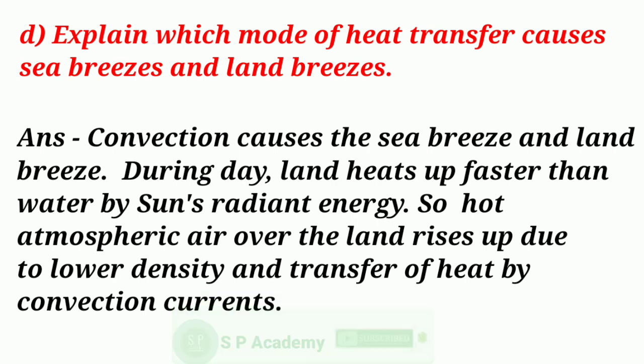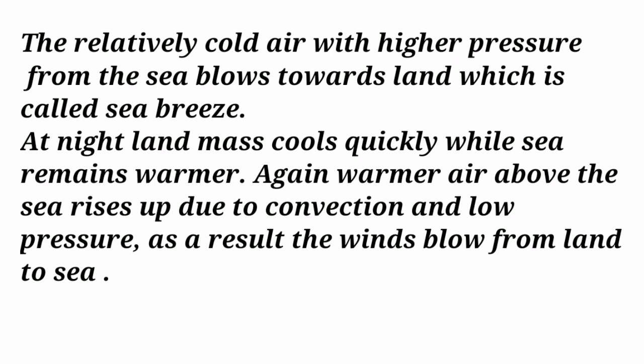Convection causes the sea breeze and land breeze. During day, land heats up faster than water by the sun's radiant energy. So hot atmospheric air over the land rises up due to lower density, transferring heat by convection currents. The relatively cold air with higher pressure from the sea blows towards land — this is called sea breeze. At night, land cools quickly while the sea remains warmer. Warmer air above the sea rises up due to convection and low pressure, and the winds blow from land to sea.